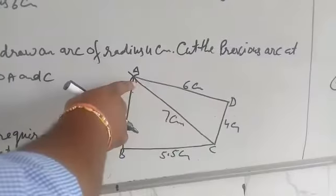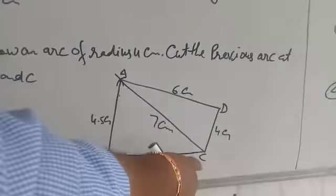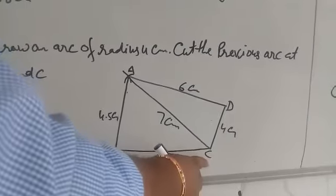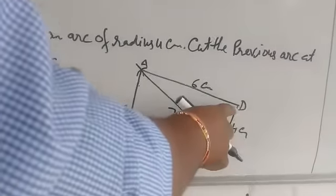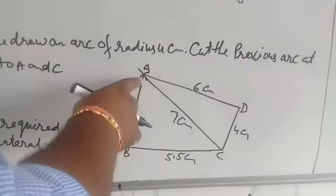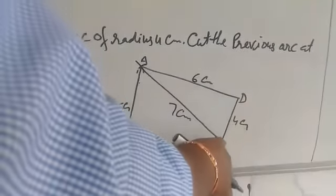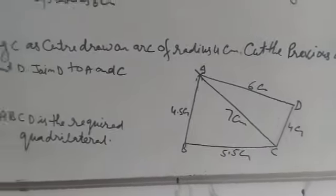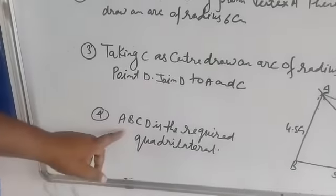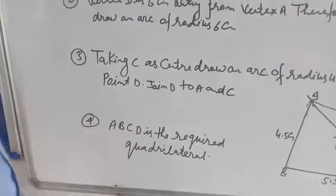Join D to A and C. With A as center make an arc of 6 cm, and with C as center make an arc of 4 cm - they meet at point D. Join A to D and D to C. Fourth: ABCD is the required quadrilateral.